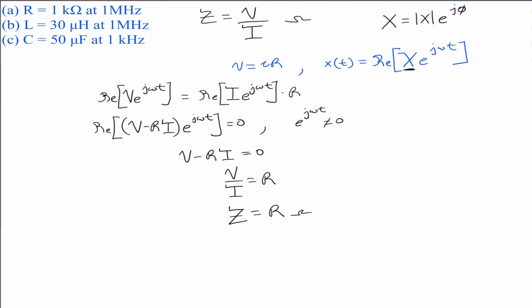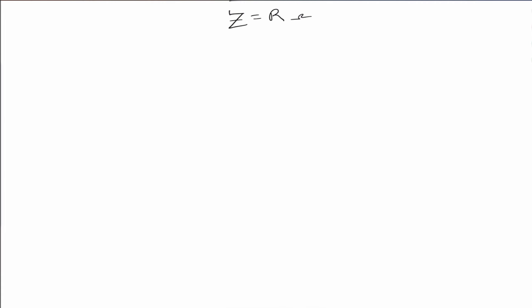The impedance for the resistor is real and is not dependent on frequency. The answer to part A is that the impedance is 1 kilohm. A resistor's impedance is entirely real, and the V-I relationship is the same in the phasor or time domain.